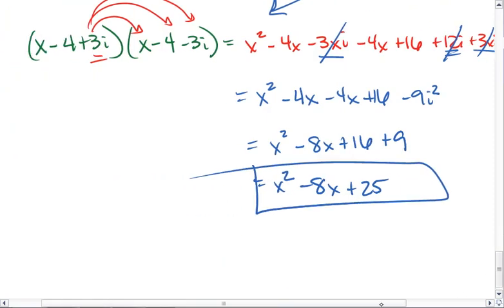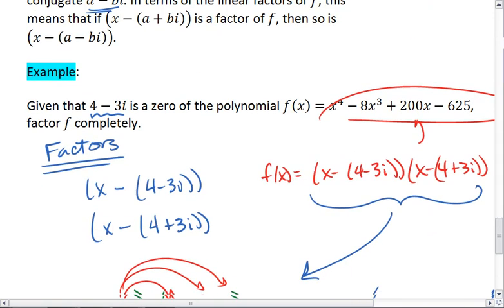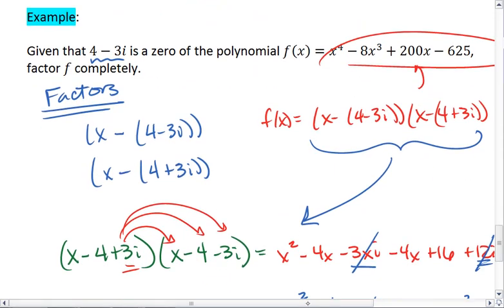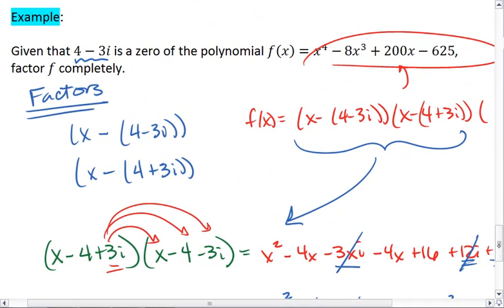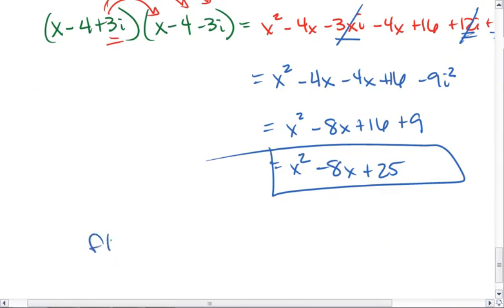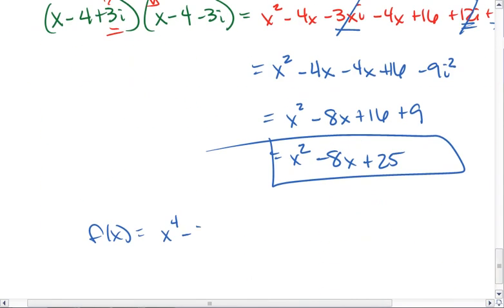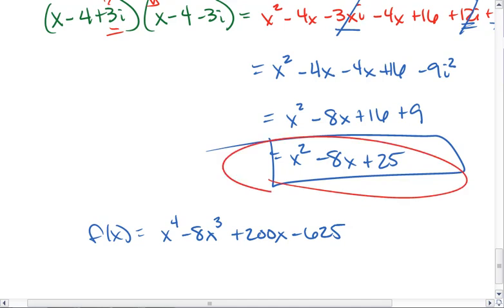That long process told me that this polynomial f of x equals x to the fourth minus 8x cubed plus 200x minus 625 is divisible by x squared minus 8x plus 25.